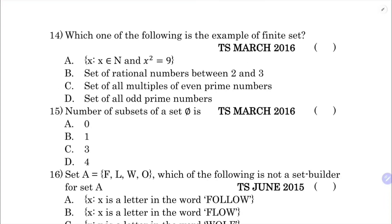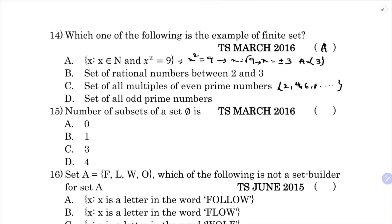Which of the following is an example of a finite set? Option A: x belongs to natural numbers and x squared equals 9, so x equals plus or minus 3. Since only positive naturals apply, the set contains only {3} - one element, so it is finite. Options B, C, and D are infinite: rational numbers between 2 and 3 are infinite, multiples of even prime 2 are infinite, and odd prime numbers are also infinite. The correct option is A.